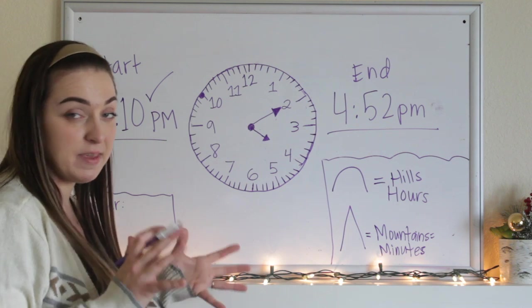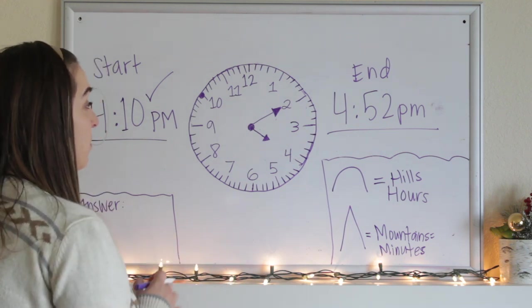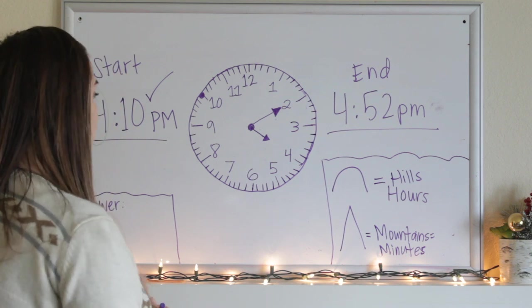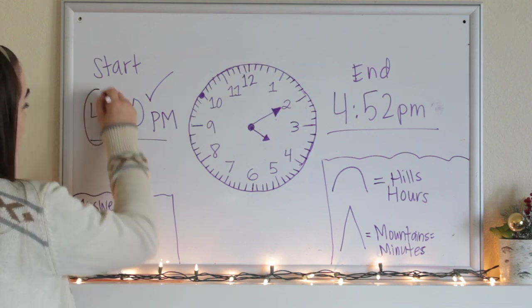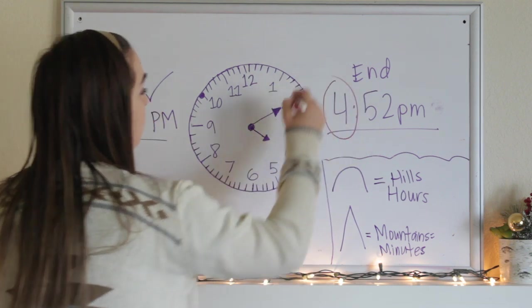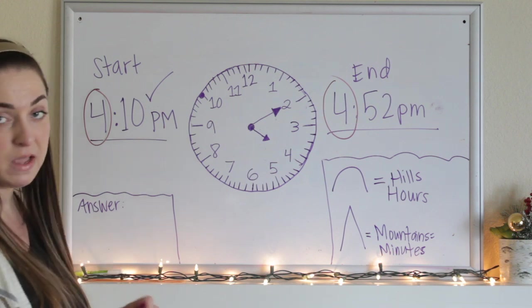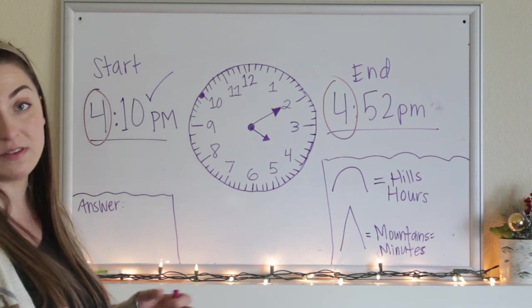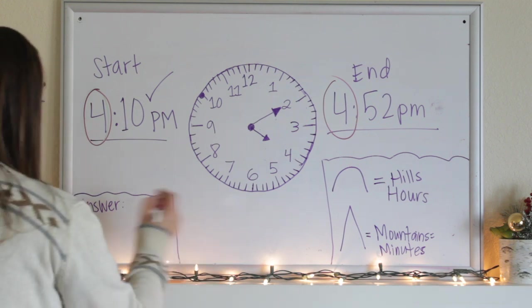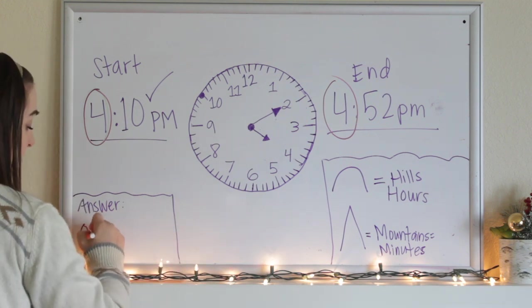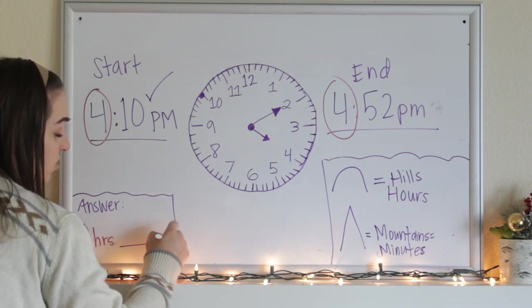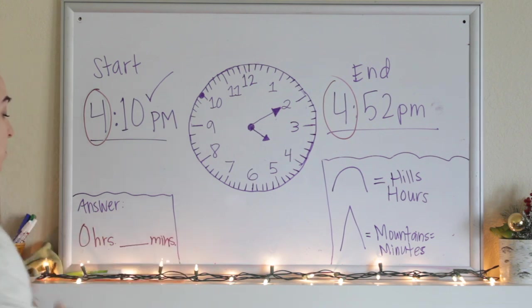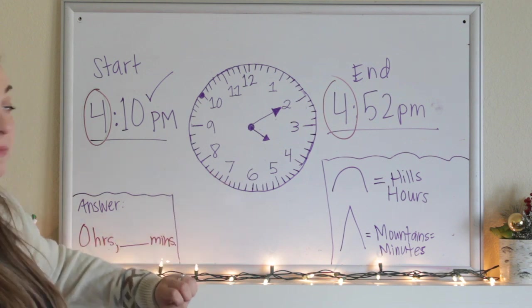Now we need to figure out how much time is in between 4:10 and 4:52. This is where the elapsed time calculations come in. And now what we're going to do is we're going to look at the hour. So in between 4:10 and 4:52, they both have the hour of 4 o'clock, right? So that means that there are no full hours in between 4:10 and 4:52. So down here in my answer box, I'm going to put that there are zero hours. We're going to need to enter in our minutes in just a few. So I'm going to leave that space open.